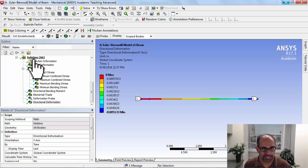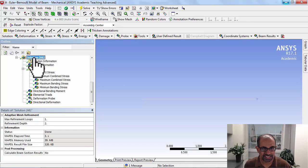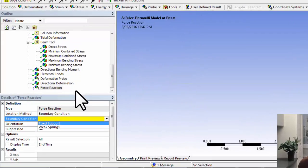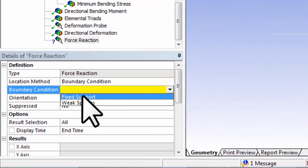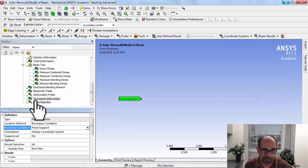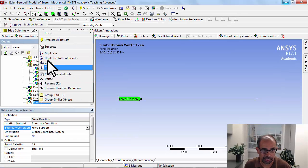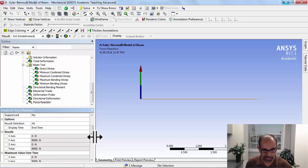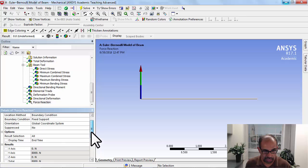If I go to ANSYS and select Solution and Probe Force Reaction, everywhere I have displacement constraints or rotation constraints, I'll get a reaction. So here I have it only at the fixed support. Ignore weak springs, and then let me evaluate that.